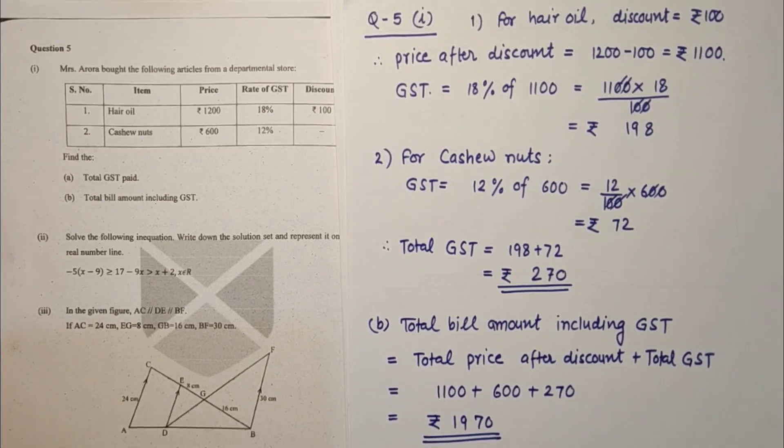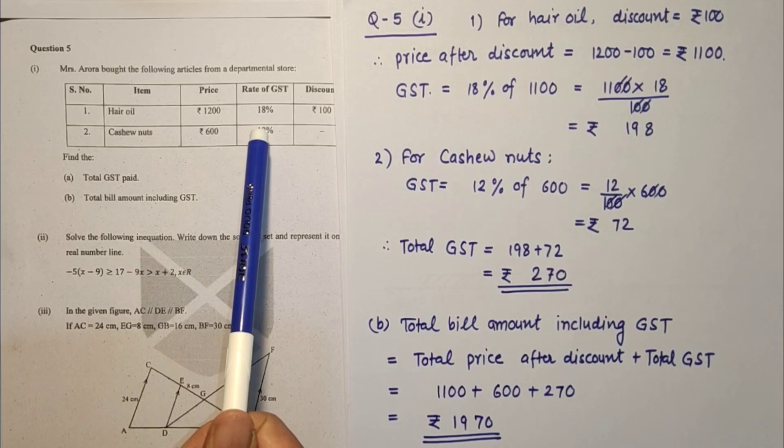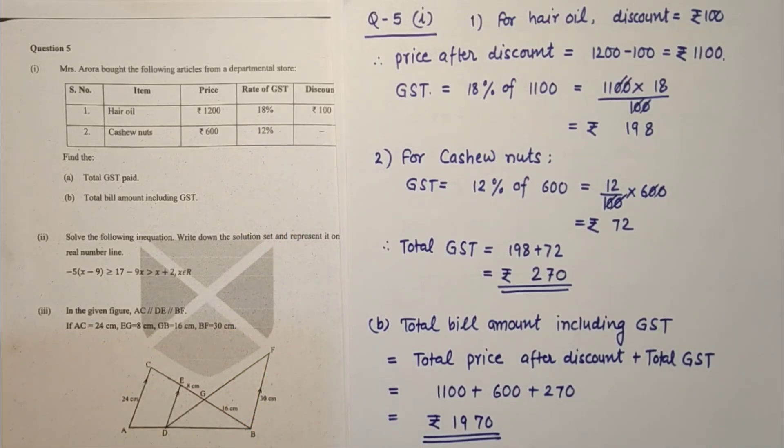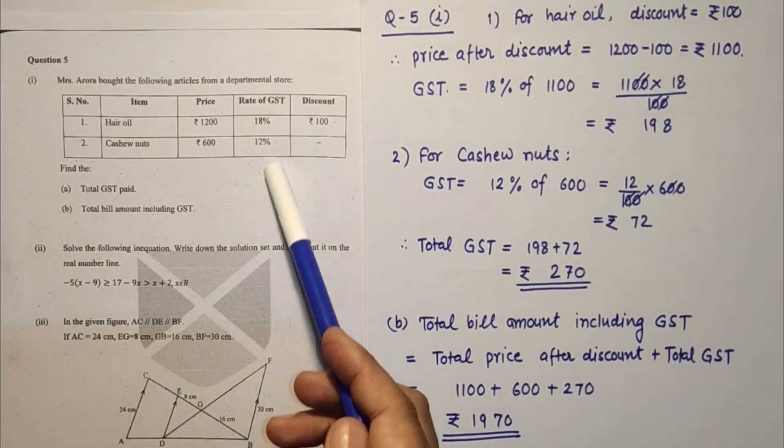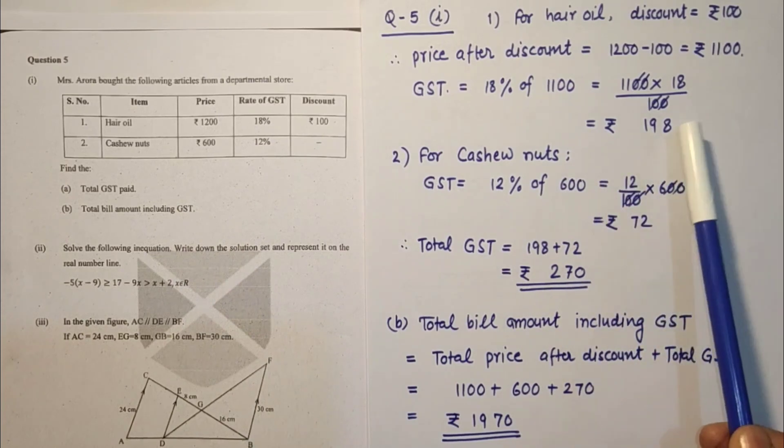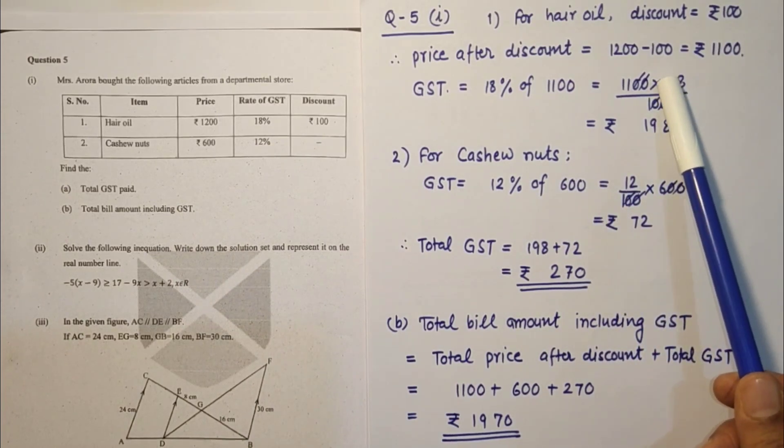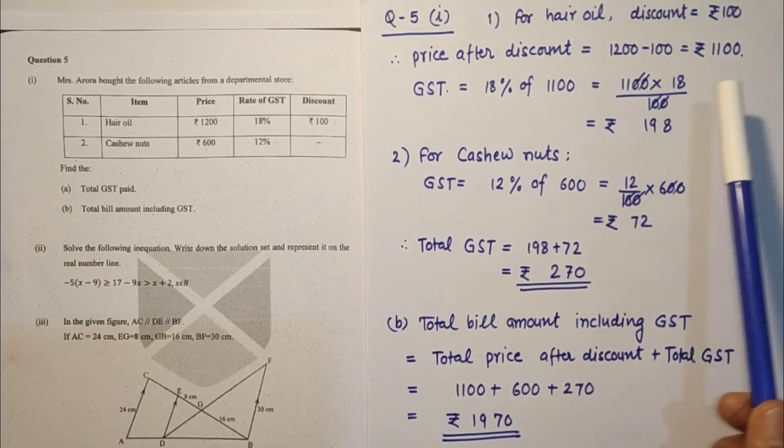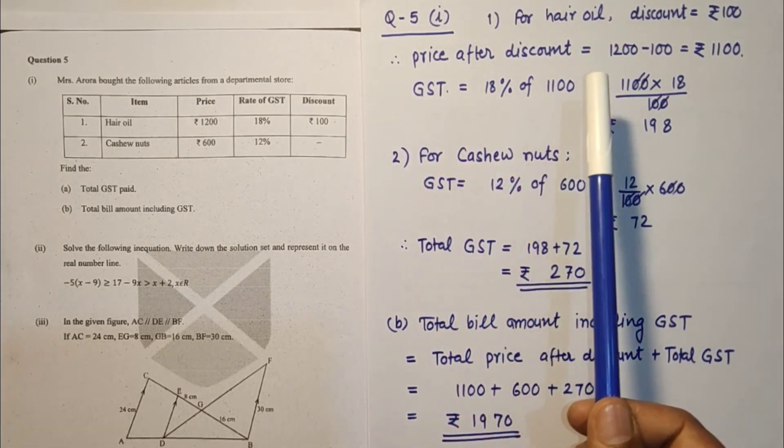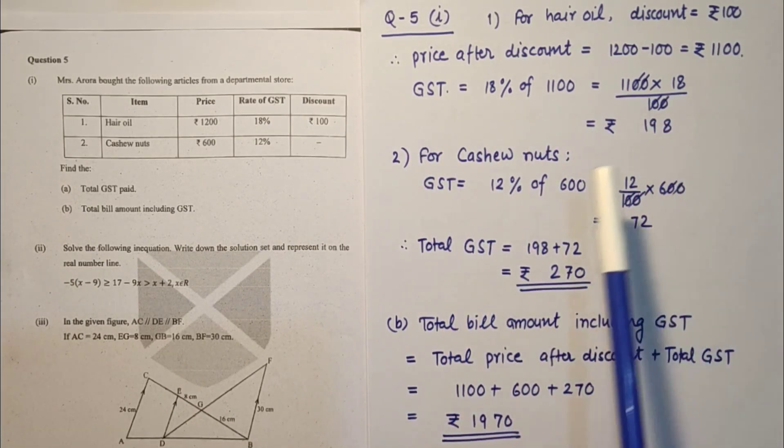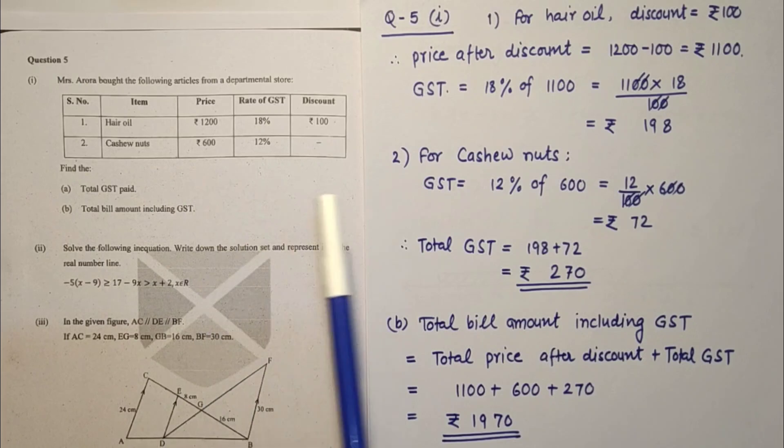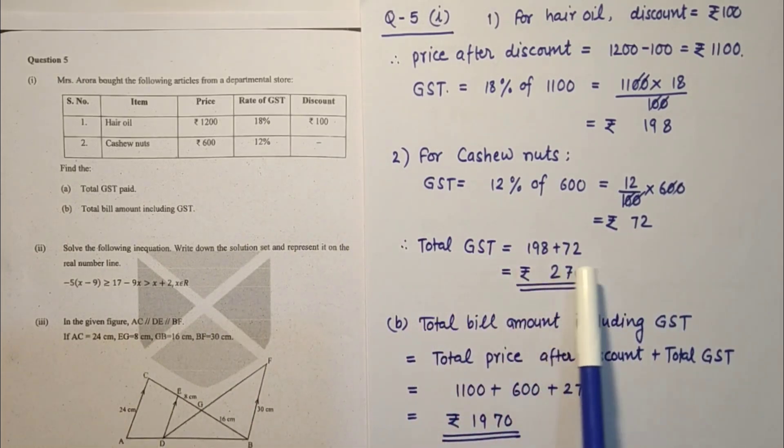Question number 5 first sub part. Two items are given, price given, rate of GST given, discount given. First find discount, that is 100 subtract, we got 1100. GST is 18% of 1100 that is 198. Similarly for this item, 12% of 600 is this. Total GST is sum of these two and total bill amount is rupees 1970.